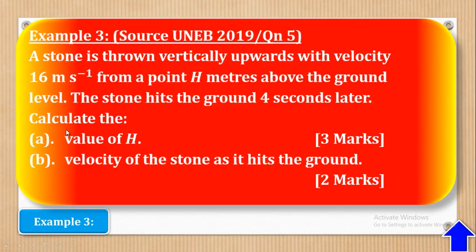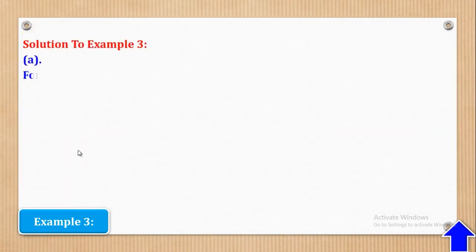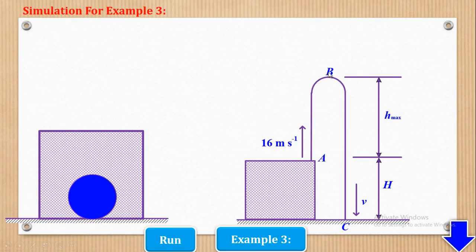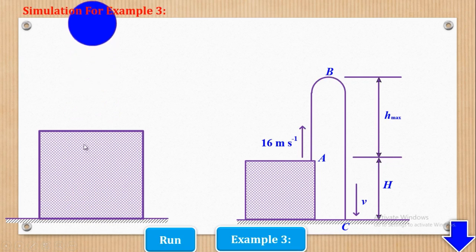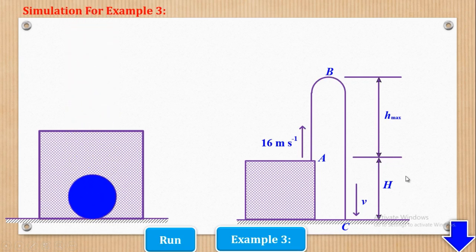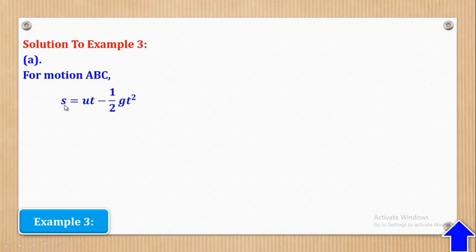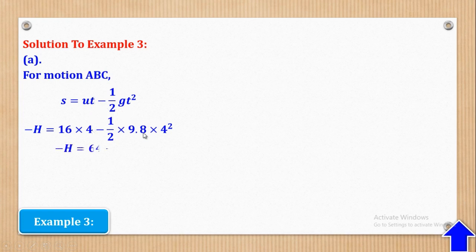We can now answer the questions. They want the value of capital H. For motion A to C — from the starting point up through the maximum point to the ground — we should remember that H is below the point of projection, so any distance below the point of projection will have a negative displacement. Therefore using the second equation of motion, S will now be negative H. Substituting: negative H equals 16 times 4 minus half times 9.8 times 4 squared. When I simplify, I come up with capital H being equal to 14.4 meters. That's what they wanted in part A.